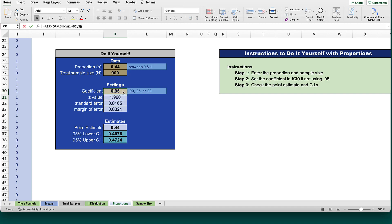In this case, the confidence interval around the population proportion is 0.4076 up to 0.4724. These numbers could easily be converted into percentages, 40.8% and 47.2%.